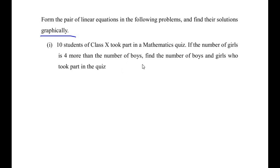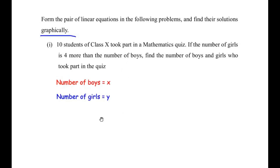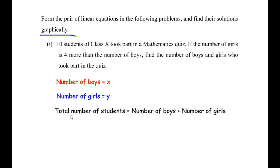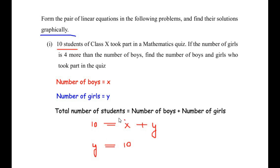Let us take the number of boys as x and number of girls as y. The total number of students is given as 10, so number of boys plus number of girls equals 10, that is x + y = 10. Rearranging, y is equal to 10 minus x. Let us consider this as equation 1.